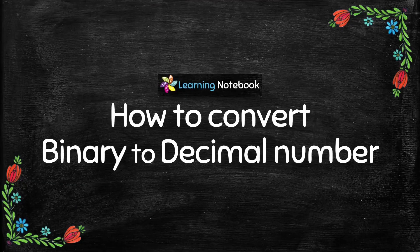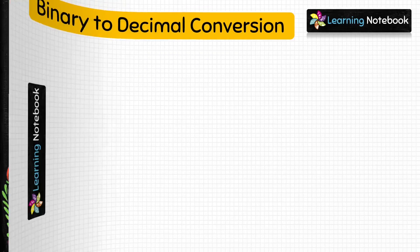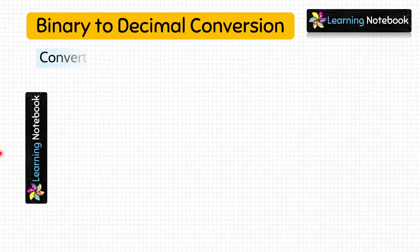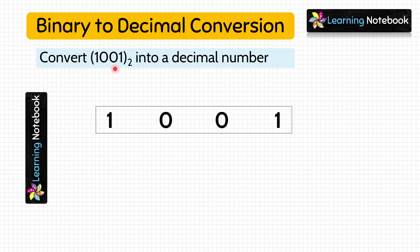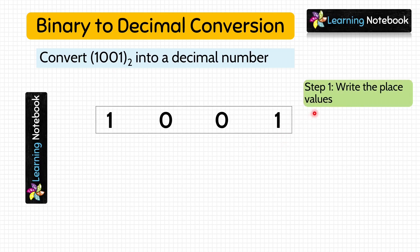Now let's learn how to convert a binary number into a decimal number. Question: convert binary number 1001 into a decimal number. To convert a binary number into a decimal number, we will follow three steps. In step 1, we will write the place value of each digit of the binary number.